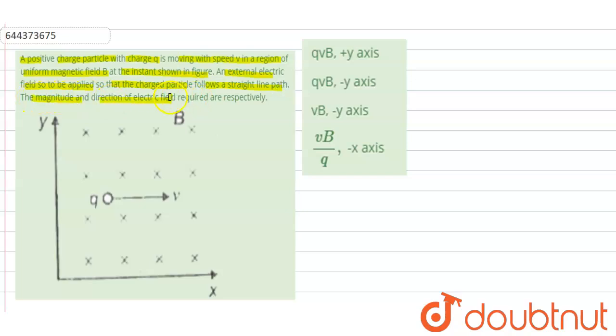The magnitude and the direction of electric field required are respectively. So here in this question it is written that the charge particle is moving towards positive x direction as shown in the diagram.